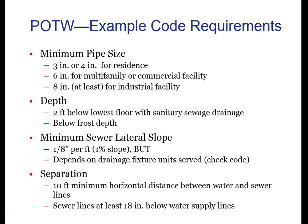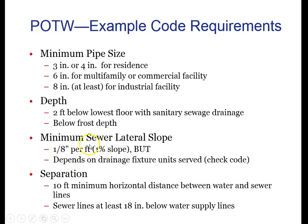Talking about code — how does water get from your house's drains out to the water treatment plant? There are code requirements for everything: minimum pipe sizes, and how deep pipes have to be buried. The key concern is that we do not want wastewater or sewage breaking through pipes and ending up back in our fresh drinking water. So first, we bury those pipes at least two feet down and below the frost line to reduce the chance they'll break. Then there's slope — how slanted those pipes are — and separation, which is about keeping wastewater away from good water.